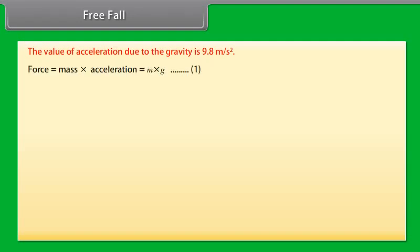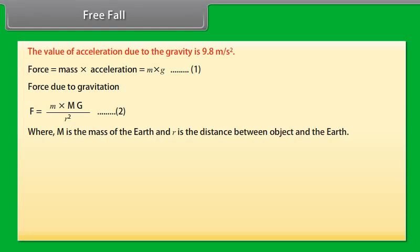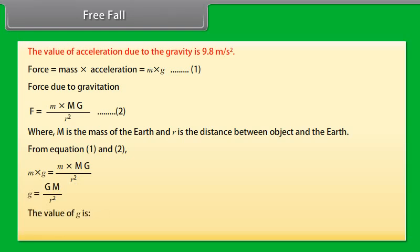Derivation: Force = mass × acceleration = m·g (Equation 1). The gravitational force F = M·m·G / R² (Equation 2), where M is the mass of the earth and R is the distance between the object and the earth. From equations 1 and 2: m·g = M·m·G / R², therefore g = G·M / R². The value of g is 9.8 m/s².